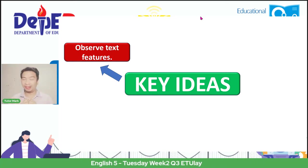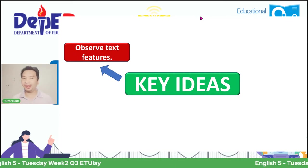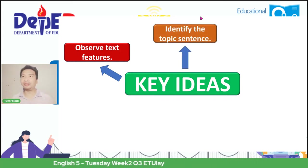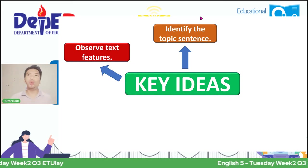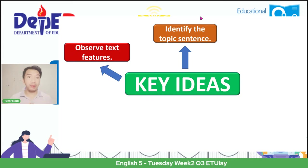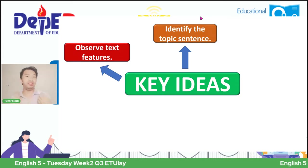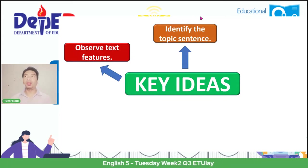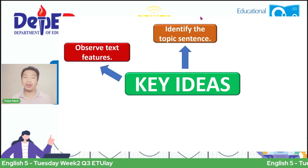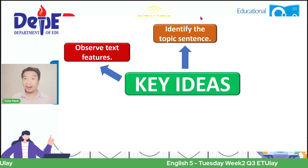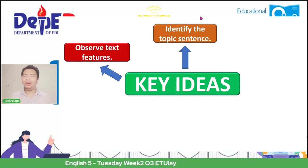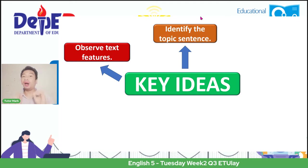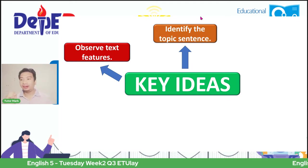I hope you are listening attentively. Please write it down on your paper. The first key idea is to observe the text features, which is what we are looking for. Next is to identify the topic sentence—what is this text about? What is the story about? Earlier, we have a story about Tipoy who was instructed by his mother to buy something. That is the topic sentence. Our second key idea is to identify the topic sentence.